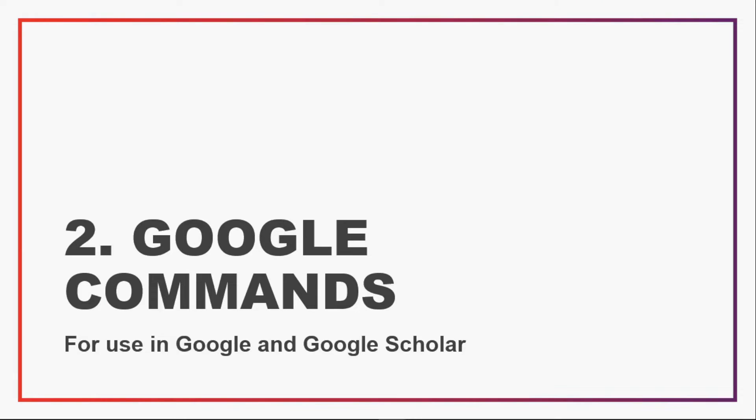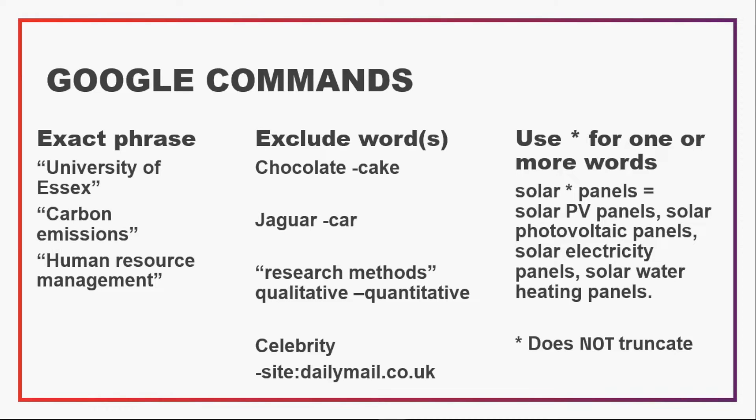Another useful thing to know about is Google commands, which you can use in both Google and Google Scholar. A commonly known one is the exact phrase command: by putting a phrase in double quote marks you can force Google to search for exactly what's within those quote marks, which helps narrow down your results and make them more relevant. Just be aware that Google sometimes ignores the quote marks if your search would otherwise return zero or too few results.